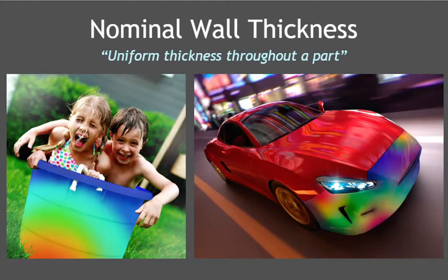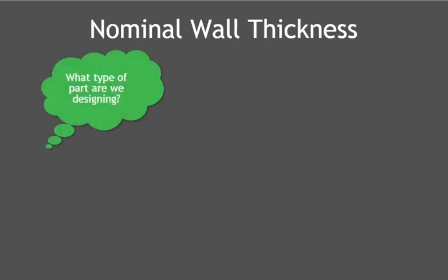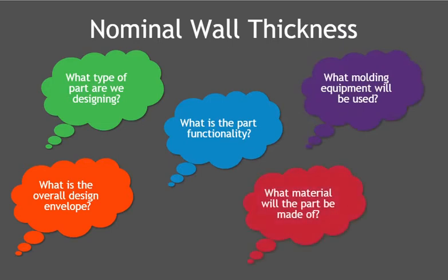Of course, nominal wall thickness will be different for a simple packaging container than for a structural automotive part. The ideal nominal wall thickness is based on what type of part is being designed, the overall design envelope or size, the resulting part's functionality, what molding equipment will be used, and lastly, what material will be used for the part.